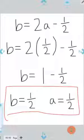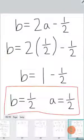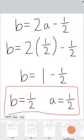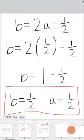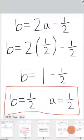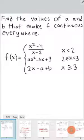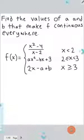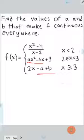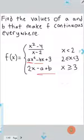So that's it. We know that if a and b are both one half, if we go back to our original piecewise function and plug in one half for a and b throughout, the resulting piecewise function will be continuous everywhere.